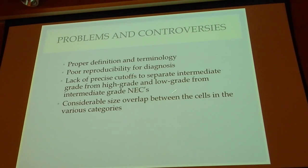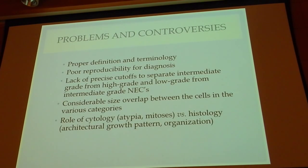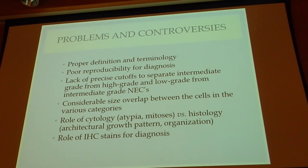High-end tumors are classified into small cell and large cell poorly differentiated neuroendocrine carcinoma. There is considerable overlap between the size of the so-called small cells and large cells, and assigning tumors specifically to one or the other can sometimes be quite difficult. The role of cytology versus histology has not been clearly defined, and there are inconsistencies in the role of immunohistochemical stains.